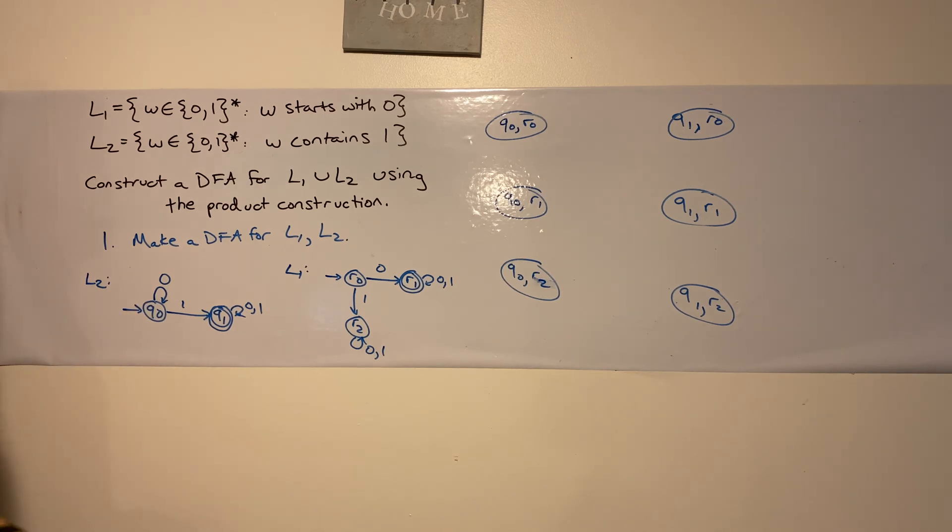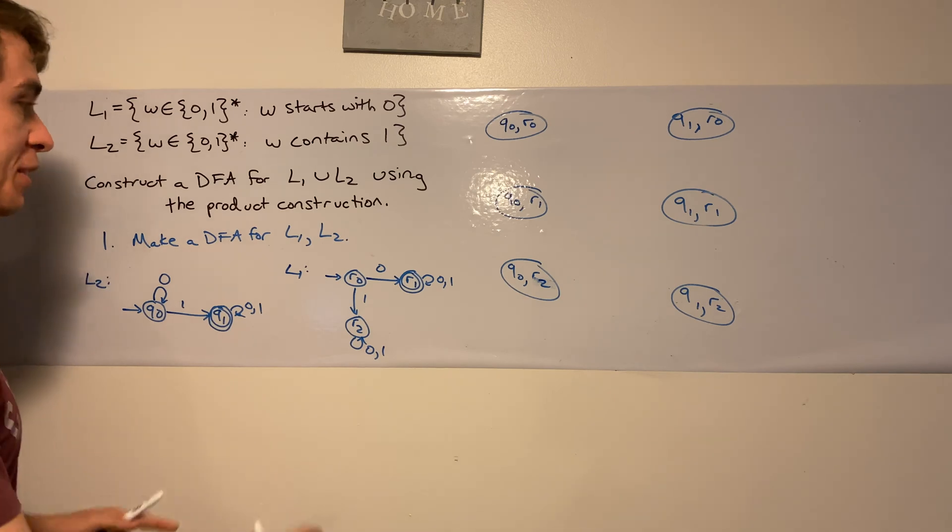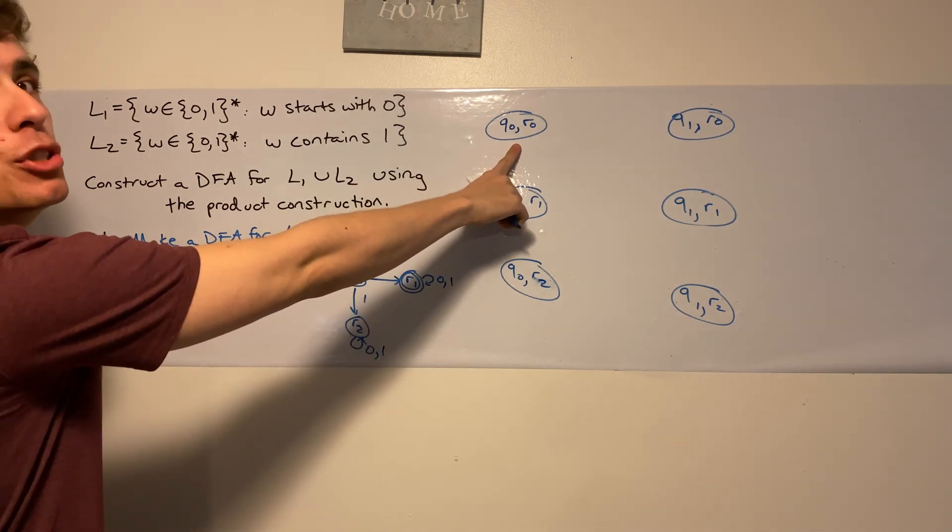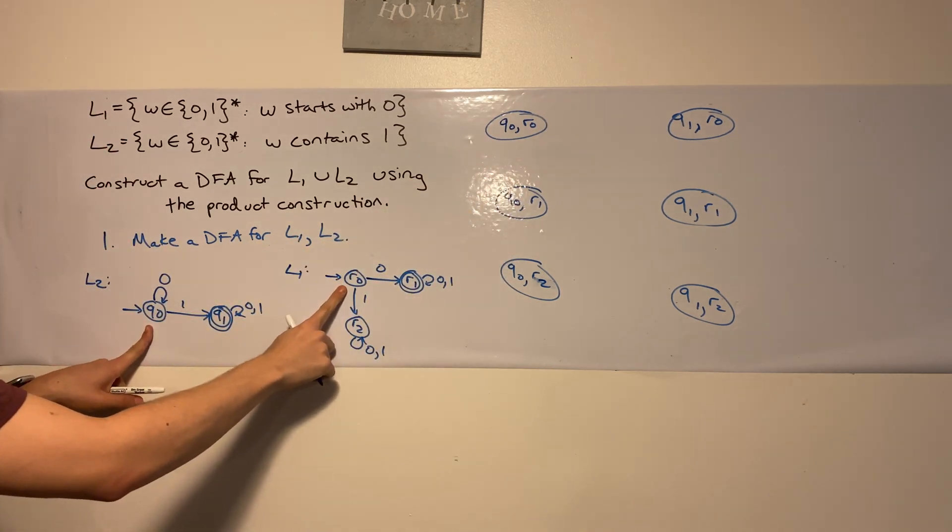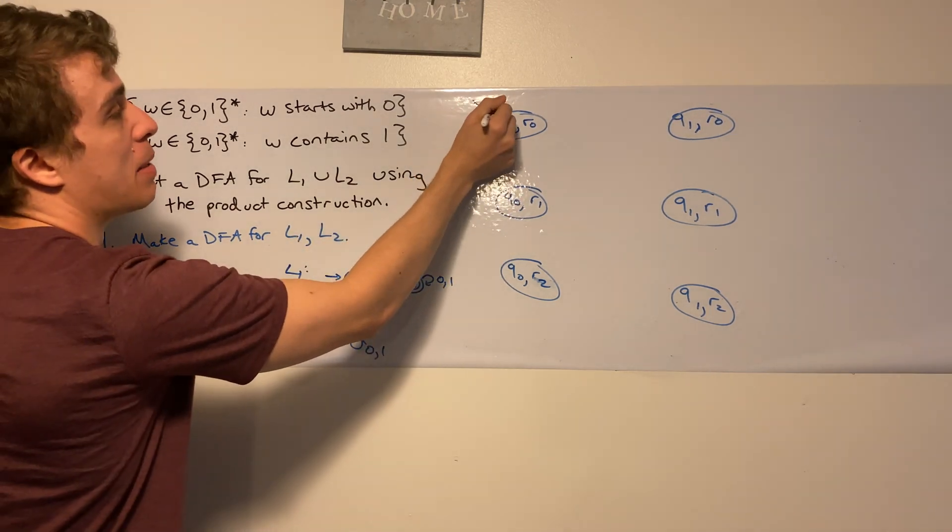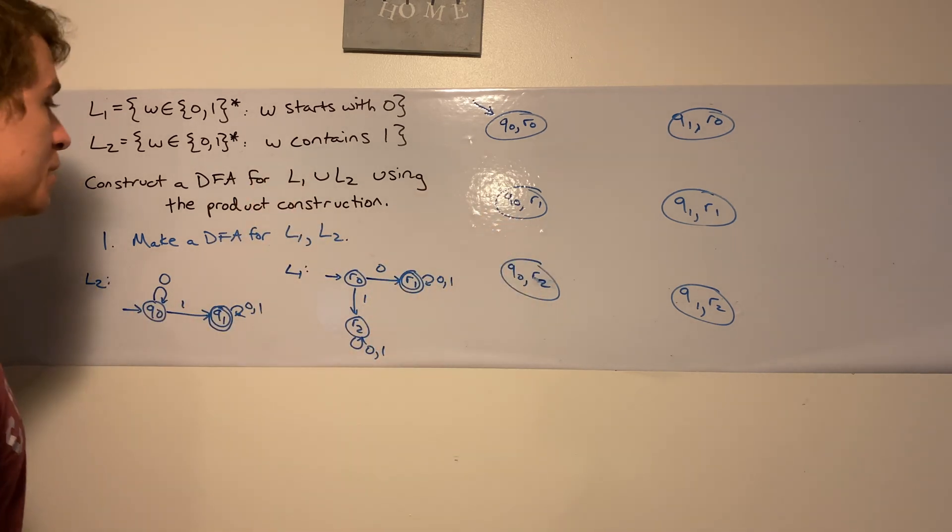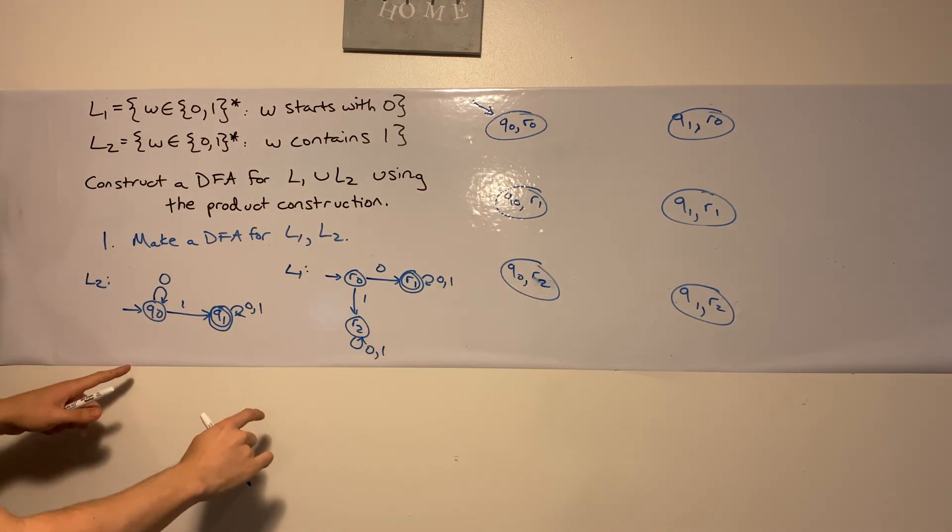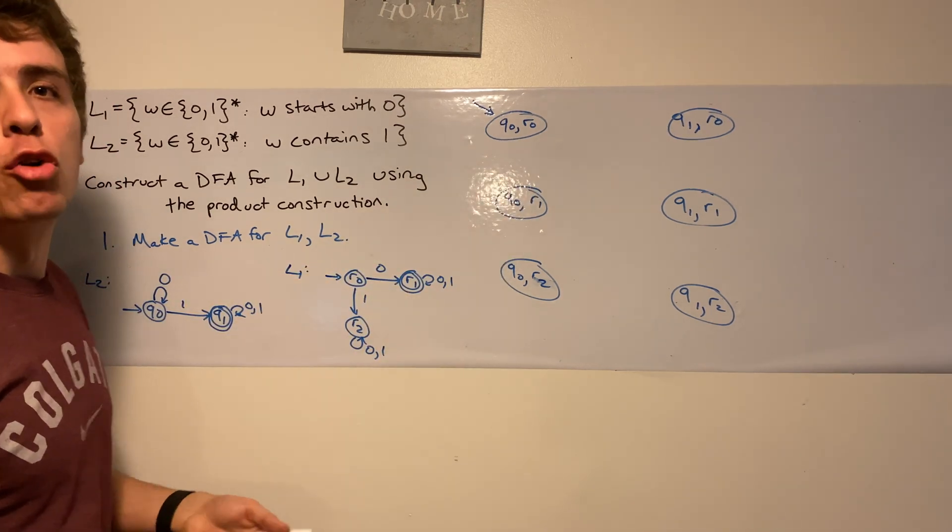So now we've got to think, what does the DFA need? It needs a start state. What's the start state here? I think it's going to be q0, r0, because those are the start states in the original ones. So this is going to be my start state. We'll deal with final states later. So let's do the transition function. So how would you actually use the transition function between all of these states? All you have to do is, from each of these pairs, figure out what the DFAs originally did.